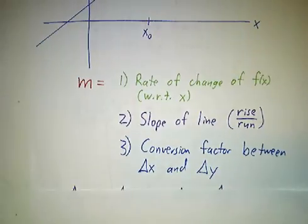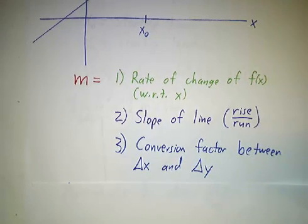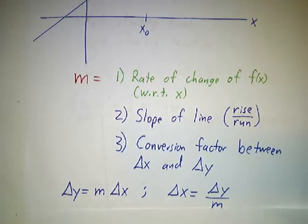And the third thing is it's a conversion factor between delta y and delta x. If I give you delta x, you can figure out delta y by multiplying by m. If I give you delta y, you can figure out delta x by dividing by m.